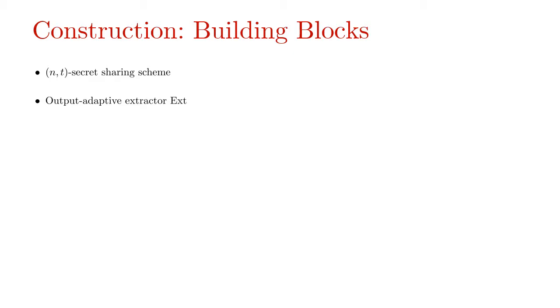Our construction has two simple building blocks, which are an N T secret sharing scheme and an output adaptive extractor Ext. Recall that an output adaptive extractor guarantees that the extractor output looks uniform, even given short adversarial leakage on the source and the challenge.